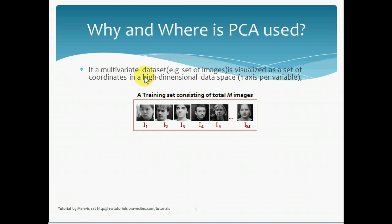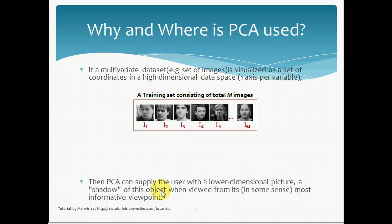So such a multivariate data set, when it's visualized as a set of coordinates in a high dimensional data space, then PCA can supply the user with a low dimensional picture, that is the shadow of this object, when viewed from its, in some sense, most informative viewpoint.